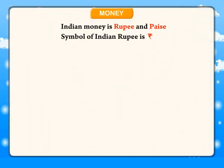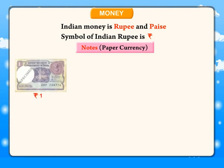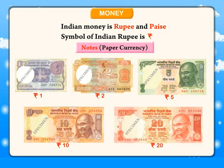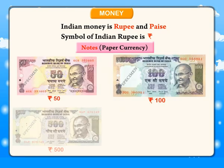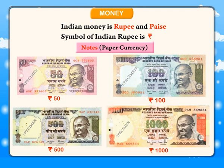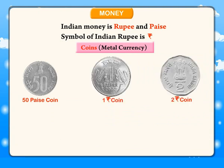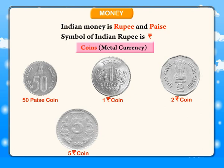Money. Indian money is rupee and paise. Symbol of Indian rupee is this. Notes — paper currency: 1, 2, 5, 10, 20, 50, 100, 500, 1000. Coins — metal currency: 50 paise coin, 1 rupee coin, 2 rupee coin, 5 rupee coin, and 10 rupee coin.